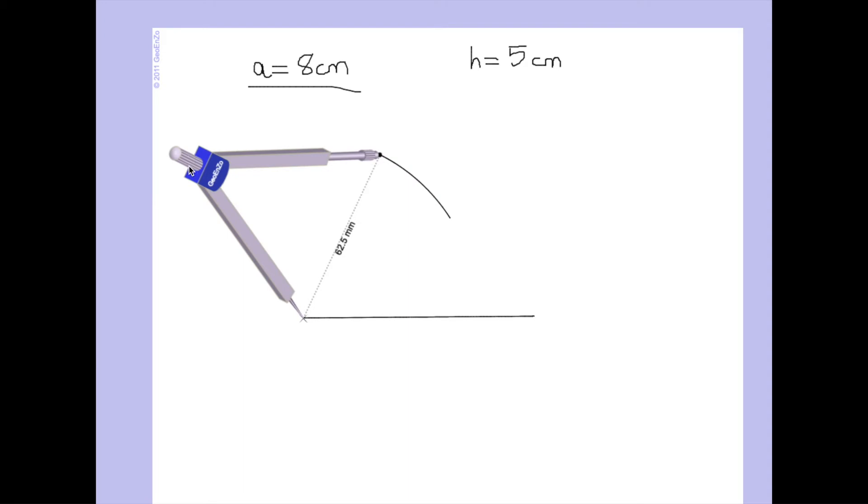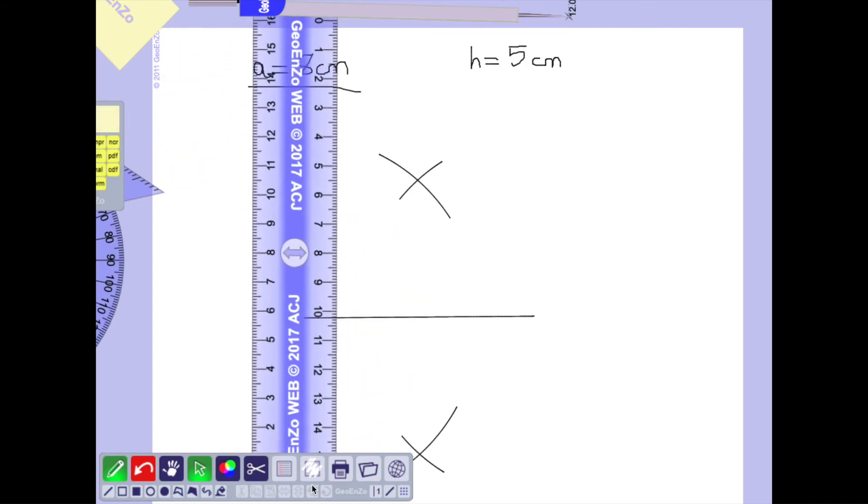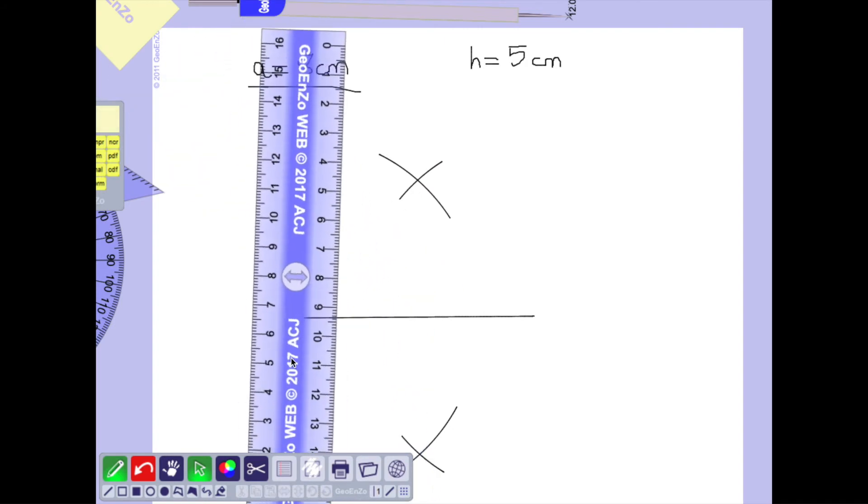So in order to find the third vertex we must take into account that it has to be at the same distance to the other two vertices. That's why we are drawing the perpendicular segment bisector.